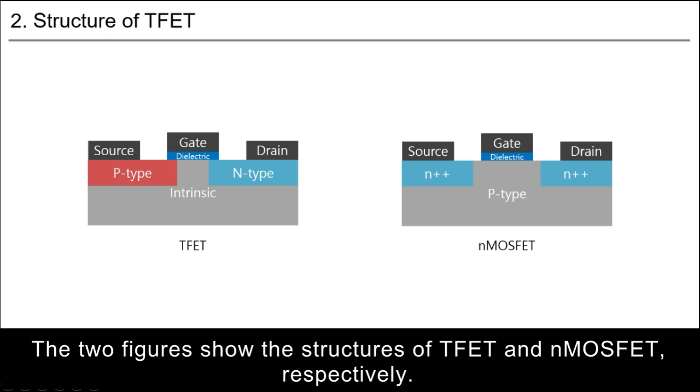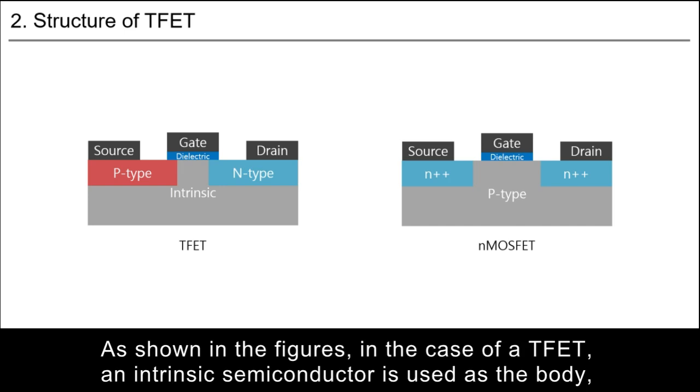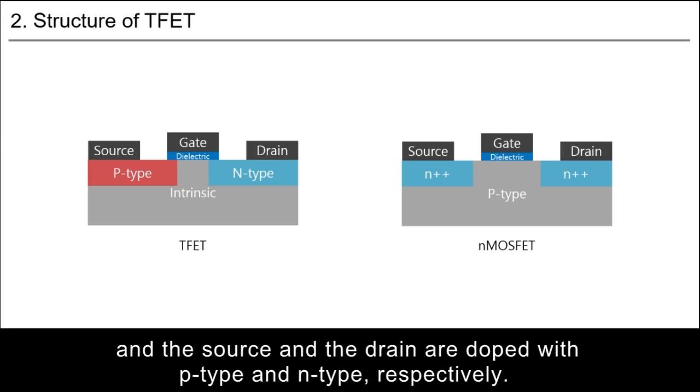The two figures show the structures of TFET and N MOSFET respectively. As shown in the figures, in the case of a TFET, an intrinsic semiconductor is used as the body, and the source and the drain are doped with P-type and N-type respectively.